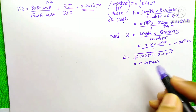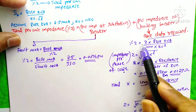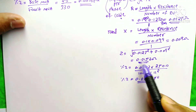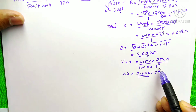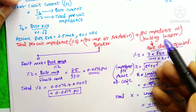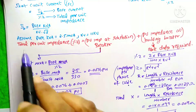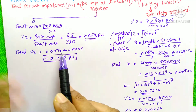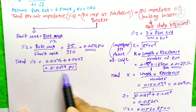I substitute Z = 0.0152 Ohms into the per unit impedance equation: Z_pu = 0.0152 × 2500 KVA / (1000 × 11² KV²) = 0.003 per unit. Now I have both per unit impedances. The total per unit impedance is 0.0076 (substation breaker) + 0.003 (building breaker) = 0.0079 per unit.